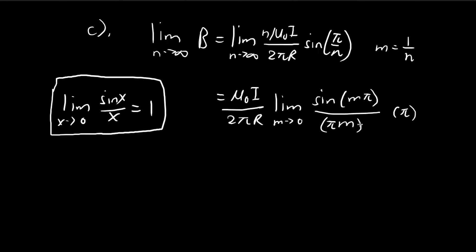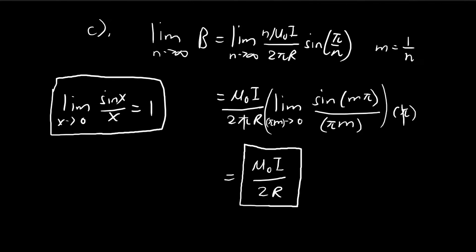As m tends to 0, πm must also tend to 0. When the thing inside sine and the denominator tend to 0 at the same rate, it's going to equal 1. So this whole thing here equals 1, and the π's cancel out. The result is that the magnetic field is given by this: μ₀I over 2R. This is the magnetic field at the center of a circle, and this is the answer for part C.